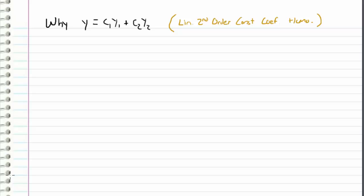So instead of moving on to the next case for linear second-order constant coefficient homogeneous differential equations, what I'm going to do is answer a question that was sent in. The question was: why did we take our solution y to be linear combinations of the two solutions that we get from both of our roots?